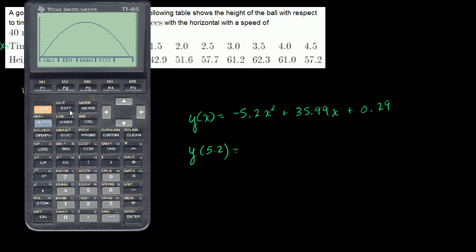So let's use this function that seems to fit the data very, very, very well to actually come up with how high was the ball at 5.2 seconds. So let's exit from here, and let's just calculate it. It is negative 5.2 times 5.2 squared. It's just by coincidence, I picked a time that equals that first coefficient, as far as the positive version of it. So 5.2 squared plus 35.99 times 5.2. Remember we're dealing with time equal to 5.2, or where x is equal to 5.2, plus 0.29.